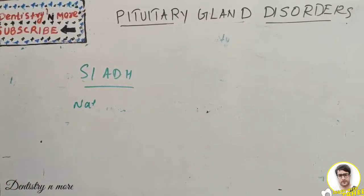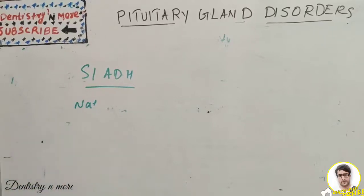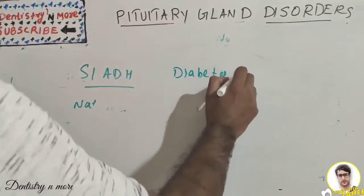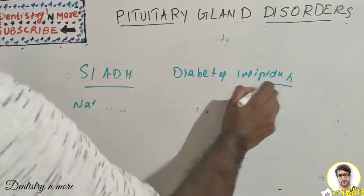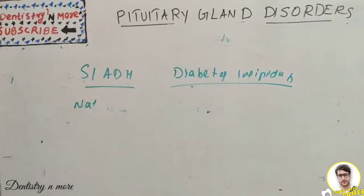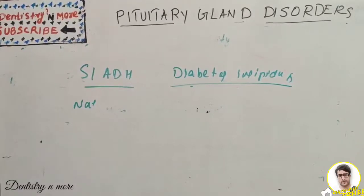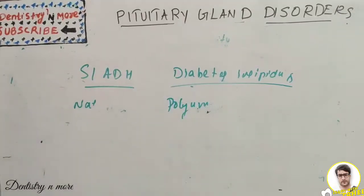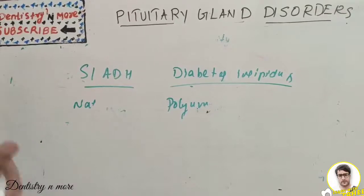Symptoms of SIADH include loss of appetite, weight loss, nausea, vomiting, headache, muscle weakness, fatigue, restlessness, and irritability. The most common posterior pituitary condition is diabetes insipidus, characterized by excess excretion of water through urine. It can be caused by a lesion or injury of the hypothalamus or atrophy of the posterior pituitary. The most common signs and symptoms include polyuria — daily urine output of 4 to 12 liters.